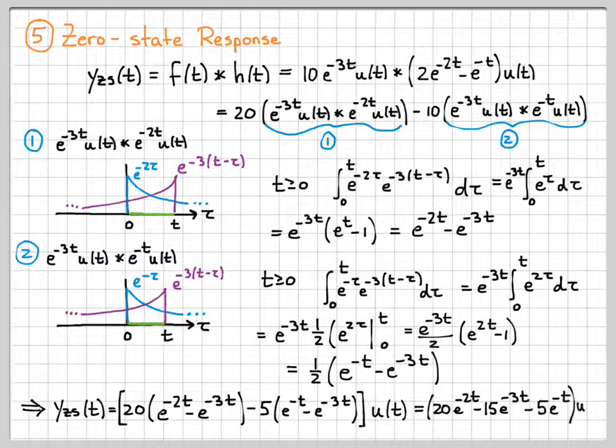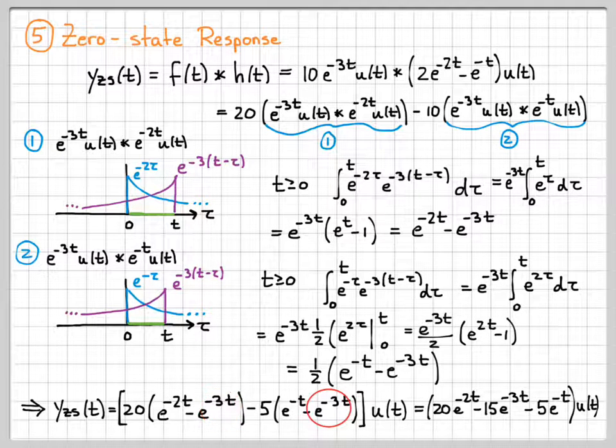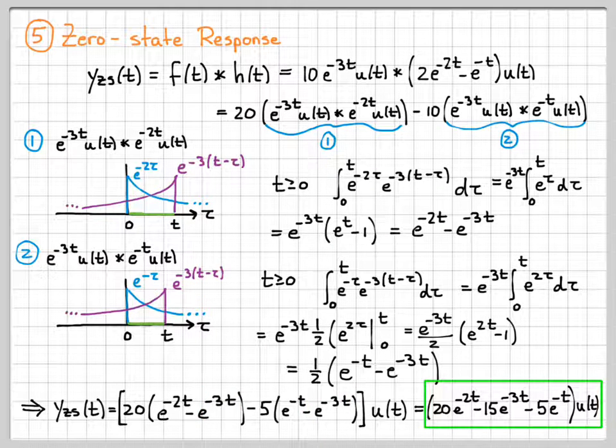I can simplify it a little bit. Notice there's some common terms here, right? There's some 3t's and 3t's here. So I can combine those. So if I do that, just a little bit of algebra, I can get this as my final zero state response.